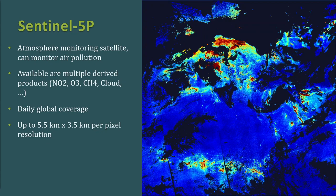Next is Sentinel-5P, an atmospheric monitoring satellite that can monitor air pollution. Multiple derived products are available measuring various atmospheric gases like NO₂, O₃, and CH₄, as well as various cloud properties. These are derived products, computed from what the satellite actually measures using various algorithms. One nice feature is daily global coverage, with resolution up to about 5.5 by 3.5 kilometers per pixel — considerably better than previous-generation satellites, so for this purpose the resolution is actually high.